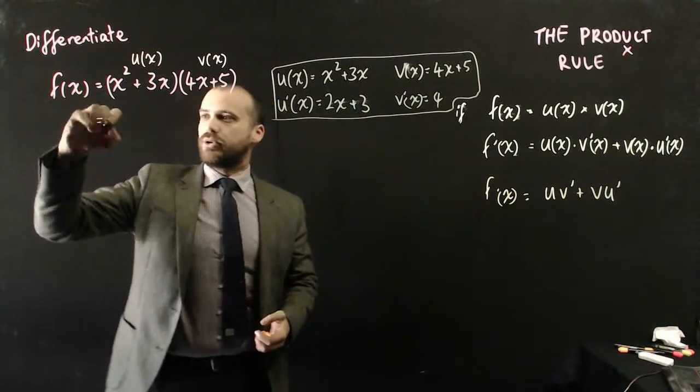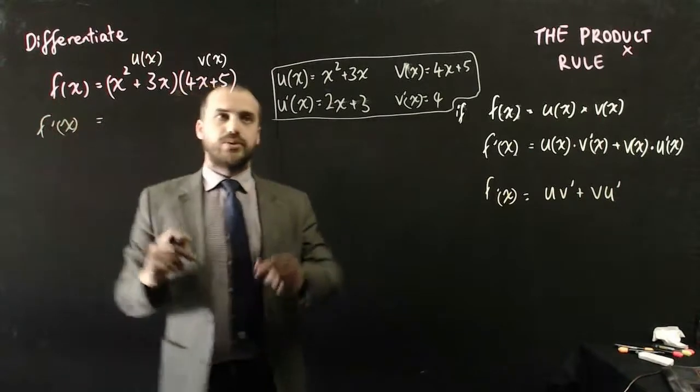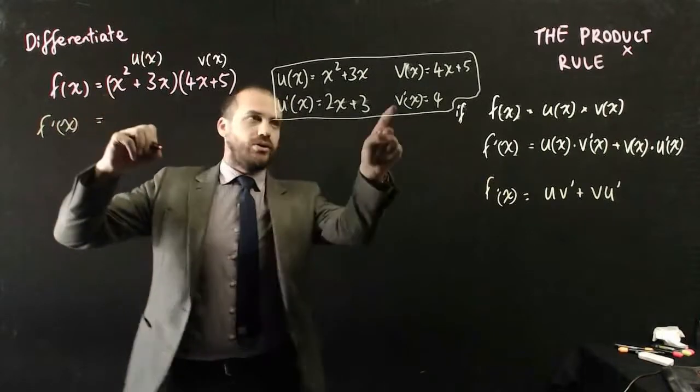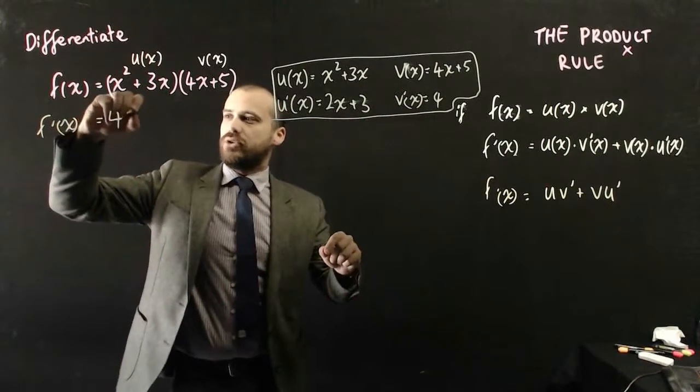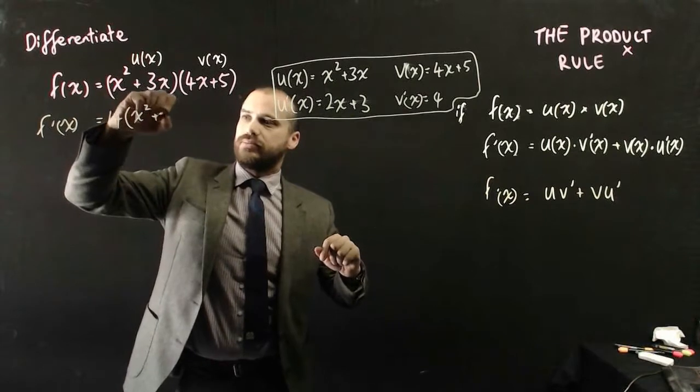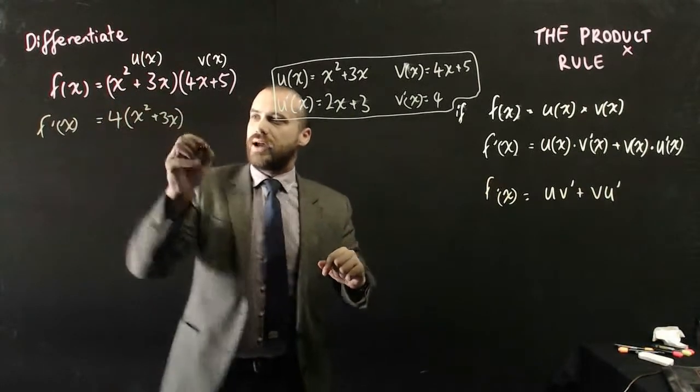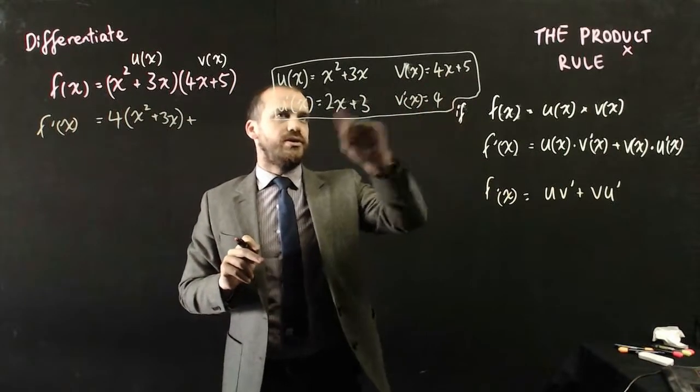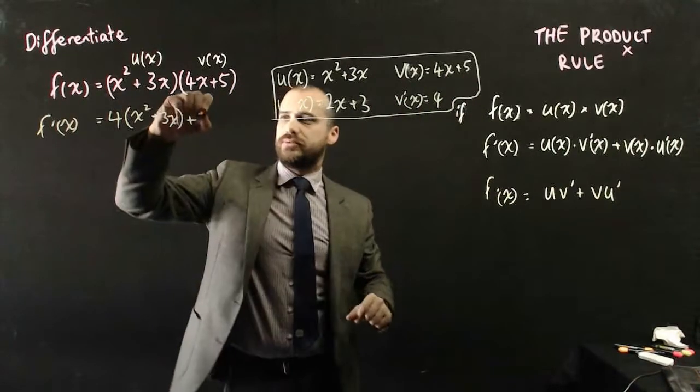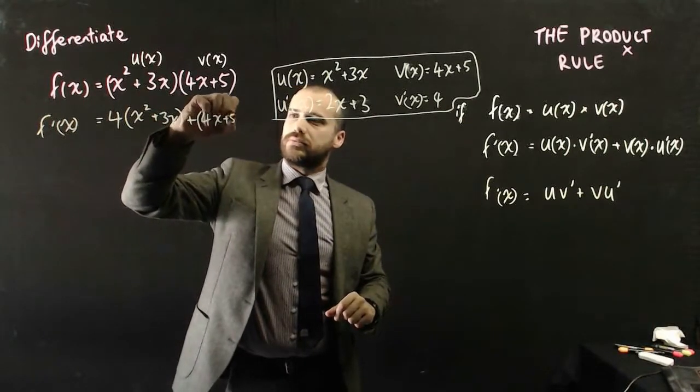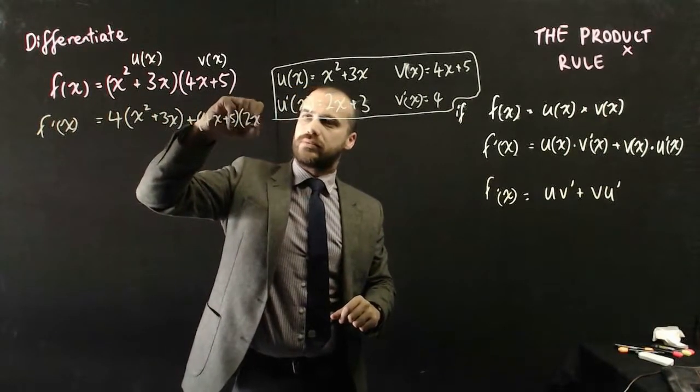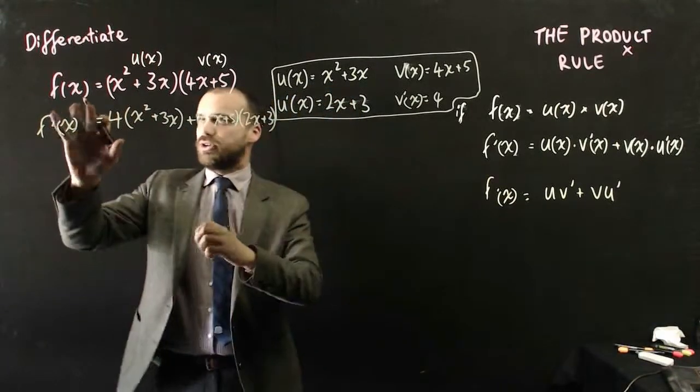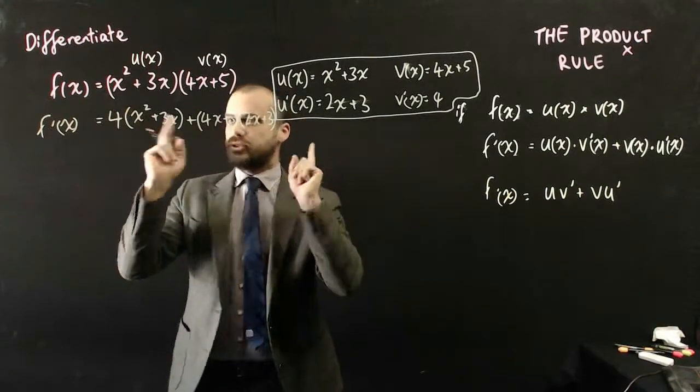Now we can put it all together. So f'(x) is equal to uv', so that times that. Or I can do it the other way if I want: 4 times (x² + 3x). And then I add the vu', so (4x + 5) times (2x + 3). So that's it. The derivative of that is equal to that.